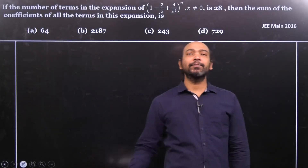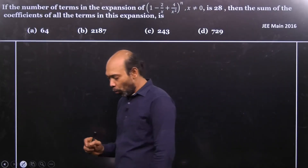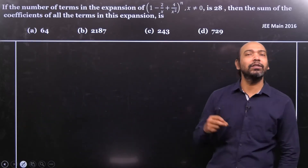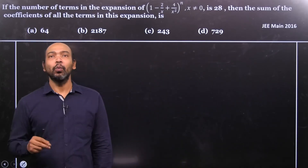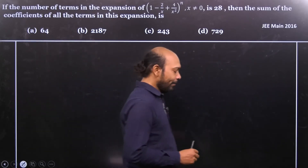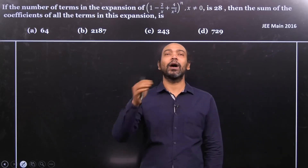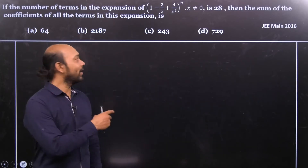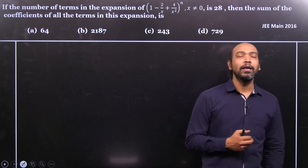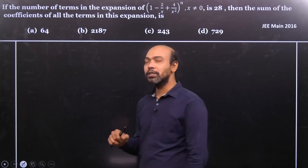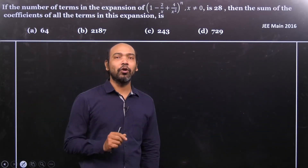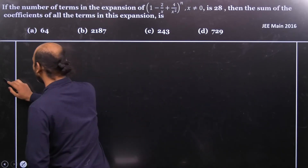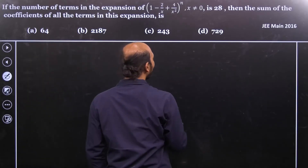In this particular problem, we are required to use the binomial expansion. In binomial theorem, we know that we have only two parameters — x plus y, y plus z, or something like that — that's why it's called binomial. But here it is given as a trinomial; three terms are there. So first, let's go ahead and see the general expansion of x plus y plus z whole to the power n.